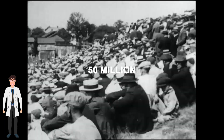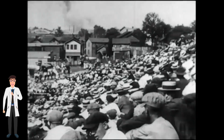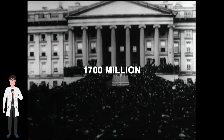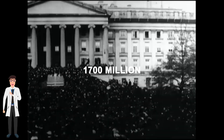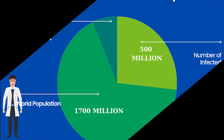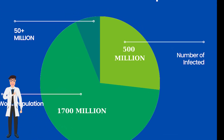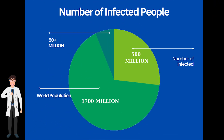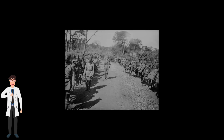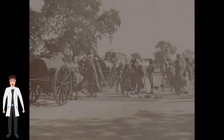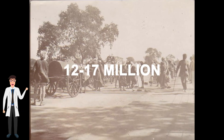Although 50 million deaths may not seem large compared to the current world population, it is important to remember that the world's population was approximately 2 billion at the time. Around 500 million people were infected with the Spanish flu — equivalent to one-third of the world's population at that time.